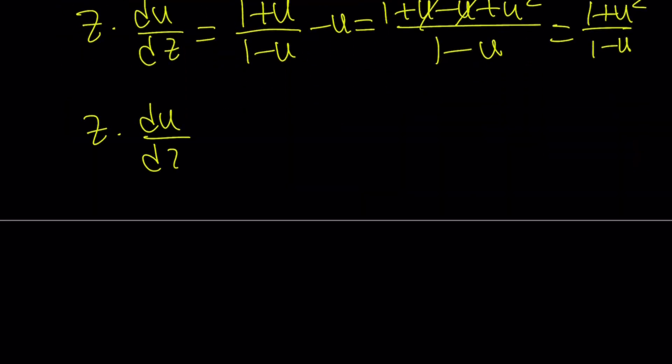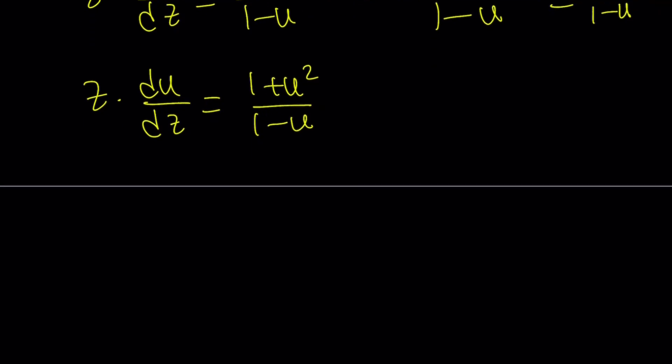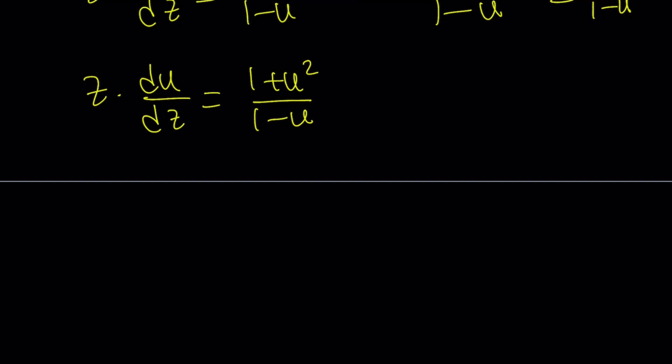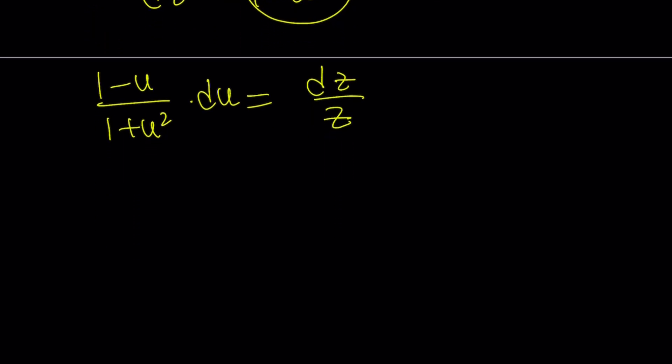And guess what? It's going to be real cool. So, we're going to subtract u from this. And that's going to give me 1 plus u minus u plus u squared divided by 1 minus u. u cancels out, and we end up with 1 plus u squared divided by 1 minus u. That is the expression for z times du over dz. And guess what? This becomes a separable differential equation. All these transformations and substitutions make it a separable equation.